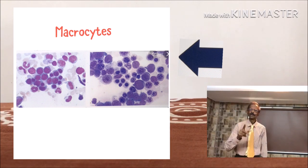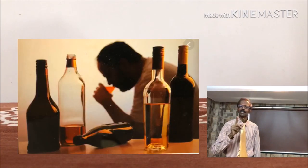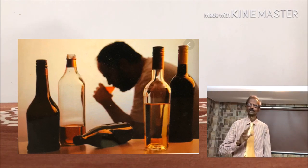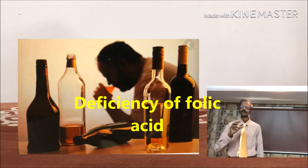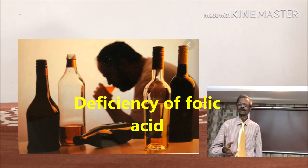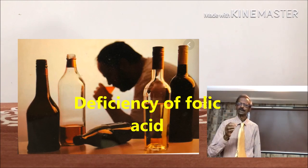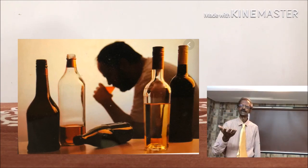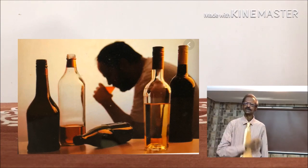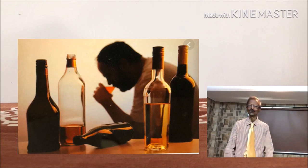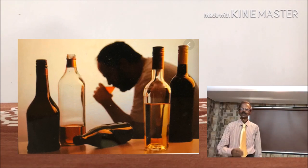Question 2: Why is this patient suffering from megaloblastic anemia? This patient is alcoholic, and chronic alcohol consumption leads to deficiency of folic acid — one of the B-complex vitamins — due to inadequate intestinal absorption, hepatic uptake, and increased urinary excretion of folic acid.